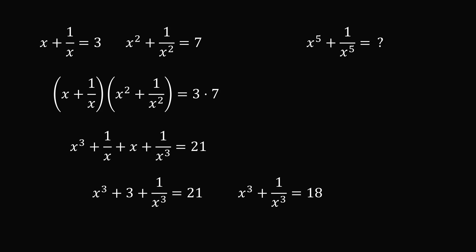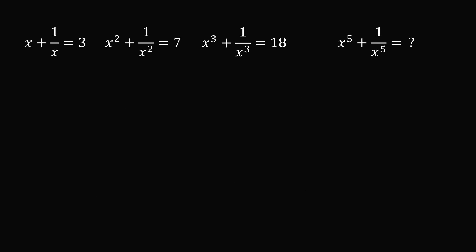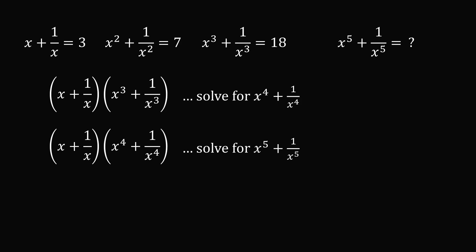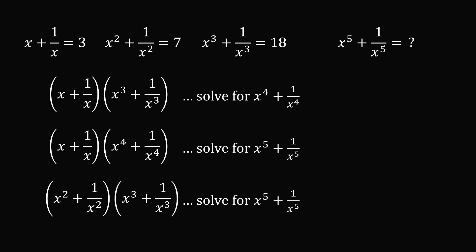We've raised the power of the exponent in this equation. Now from here there are two different ways we could go. One way is to keep stepping up the ladder — multiply x plus 1 over x with x cubed plus 1 over x cubed to solve for x to the power of 4 plus 1 over x to the power of 4, then multiply that by x plus 1 over x to solve for x to the power of 5 plus 1 over x to the power of 5. But there's a neat little trick: we can directly solve for x to the power of 5 plus 1 over x to the power of 5 by multiplying x squared plus 1 over x squared by x cubed plus 1 over x cubed.